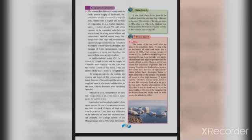In mid-latitudinal zones, between 25 to 35 degrees north and south, rainfall is less and the supply of fresh water from rivers is also low. This zone has the hot deserts of the world. Thus, the salinity of the sea is found to be higher here.